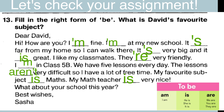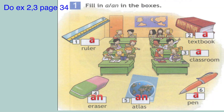Я надеюсь, что вы все сделали правильно. Идём дальше. Вспоминаем артикль. Когда мы ставим a, а когда an? Мы ставим артикль a, если первая буква существительного начинается на согласную. А если слово начинается с гласной, то ставим an. Я хочу, чтобы вы сделали упражнение номер 2, страница 34, и упражнение номер 3, страница 34. Поставьте видео на паузу и выполните упражнение.